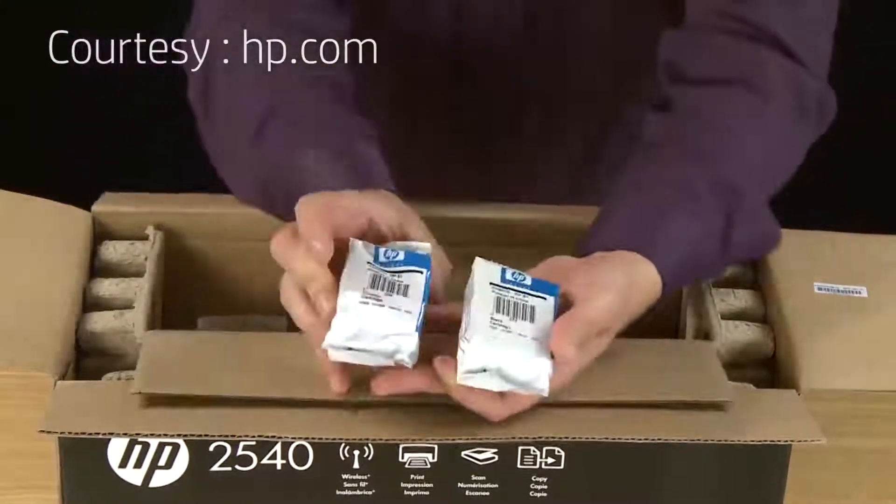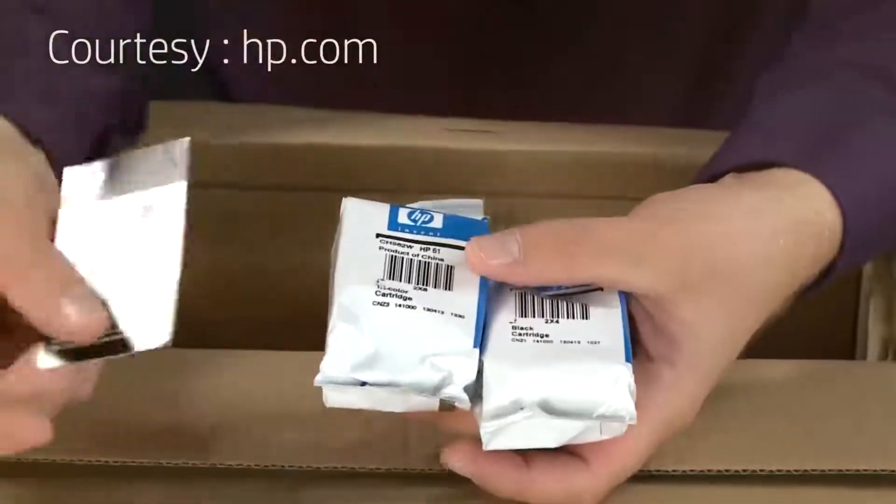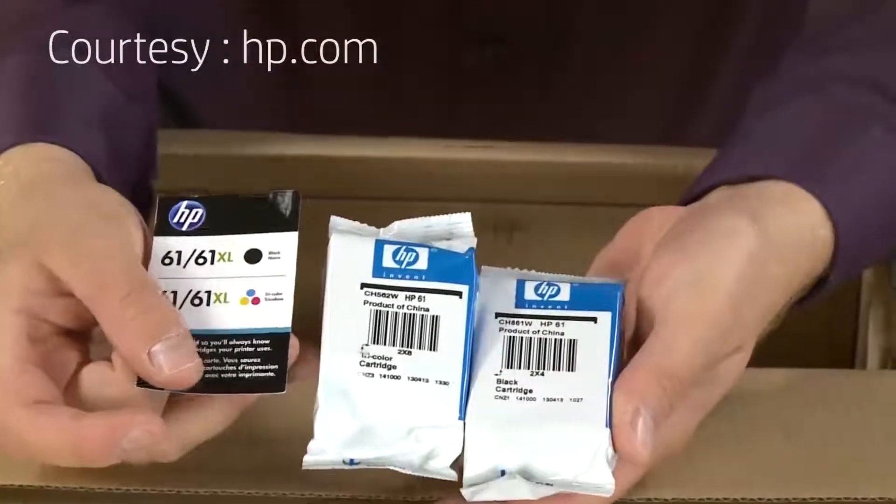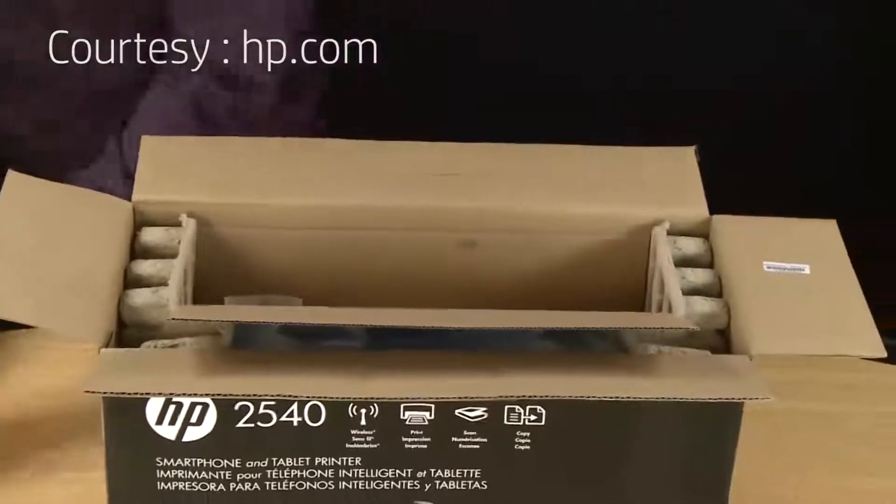The last items in this part of the box are the cartridges for your printer. Your printer comes with both a black and tri-color cartridge. Here's the cartridge card for your printer. You'll want to reference this when you need to replace the cartridges.